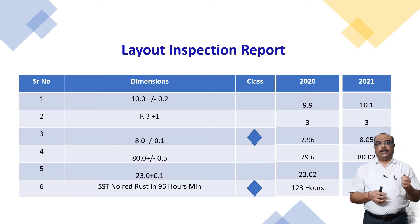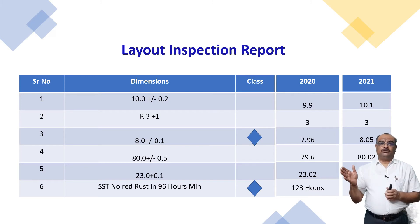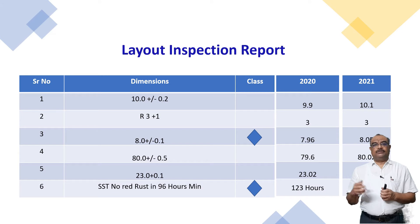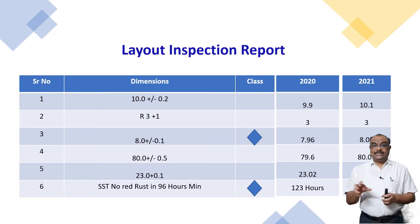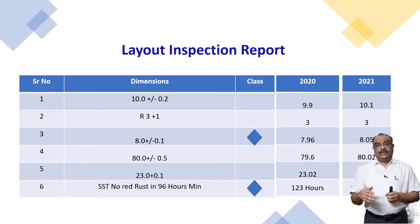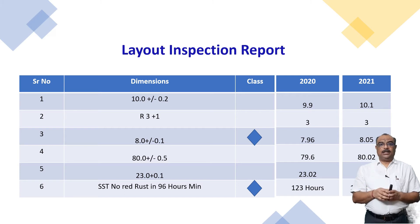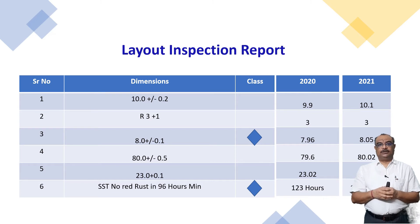We have to take decisions on the basis of risk. Suppose the dimension was 9.9 in 2020 and 10.1 in 2021 — when will it go out of specification? Maybe next year when we do the inspection, it might be out of specification. By doing this analysis you can predict the future, and if people have the capability to predict the future, they can prevent customer complaints and internal rejections.